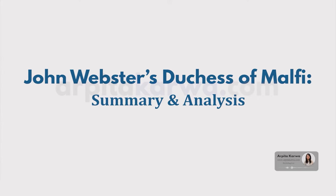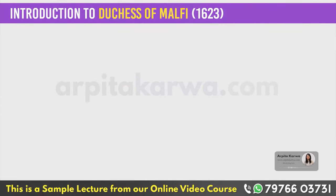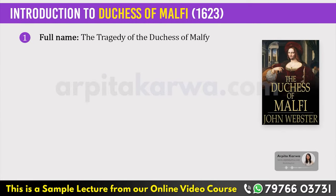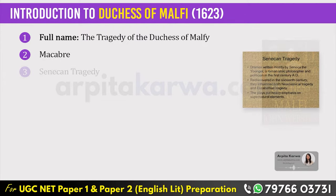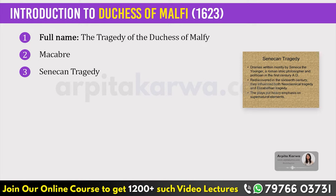It's a five-act play written by John Webster. The full name of this play is The Tragedy of the Duchess of Malfi. It is a fine example of Macabre. The Duchess of Malfi, like most of Webster's work, is a part of the genre of drama known as Senecan Tragedy, named for the Roman playwright Seneca, who is credited with inventing the form.